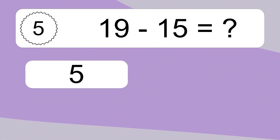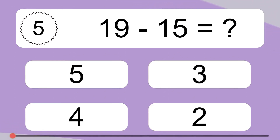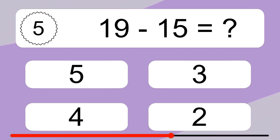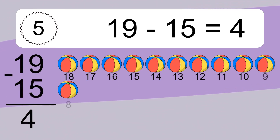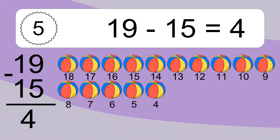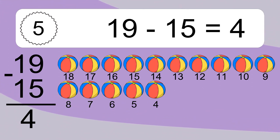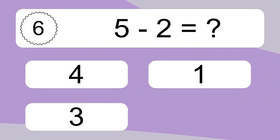19 minus 15 equals what? Let's count it: 18, 17, 16, 15, 14, 13, 12, 11, 10, 9, 8, 7, 6, 5, 4.